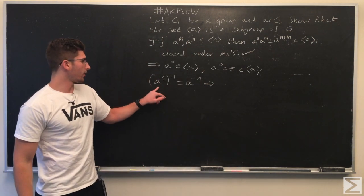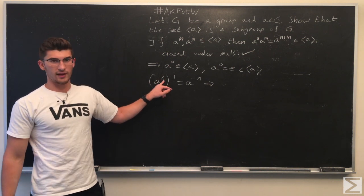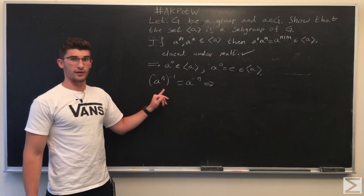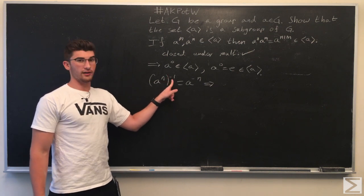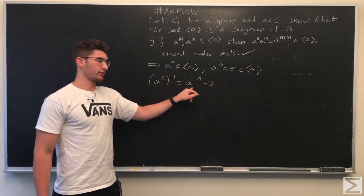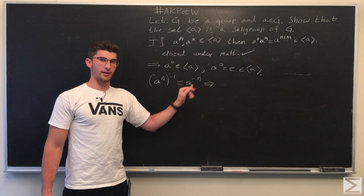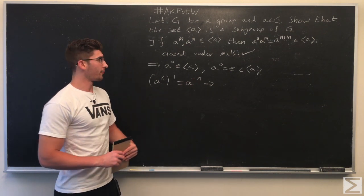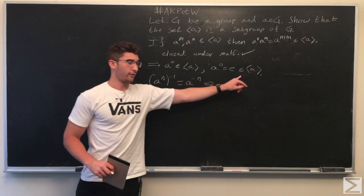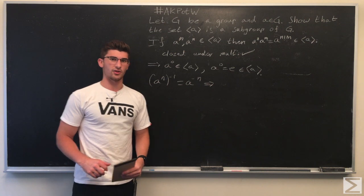Moreover, A to the N, an element of the things generated by A, to the negative first is equal to A to the negative N, which means that this set of things generated by A includes all inverses.